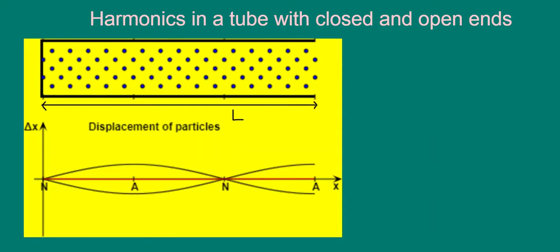If we look at the next harmonic, we see that three quarter wavelengths now fit into the length L, meaning that lambda is equal to 4L over 3.